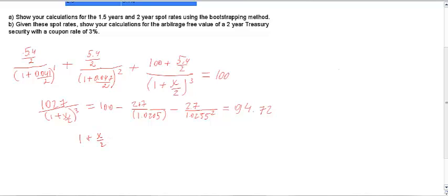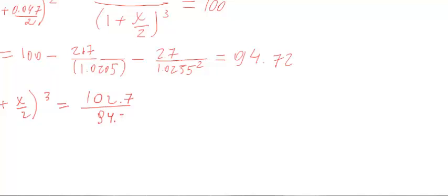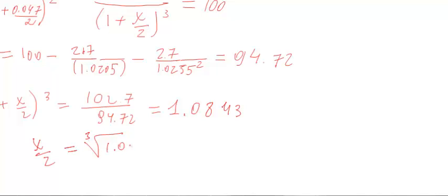So we have (1 + x/2)^3 = 102.7 / 94.72, which is approximately 1.0843. Therefore x/2 equals the cube root of 1.0843 minus 1. Solving for x, we get approximately 0.0547, or 5.47%. This is the theoretical spot rate for the 1.5-year term to maturity.